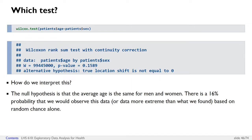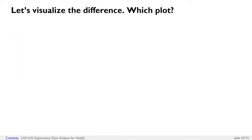Each test also has a test statistic associated with it — that's the large number to the left of the p-value in the output. You don't have to directly interpret that number; just focus on the p-value that comes to the right of it.